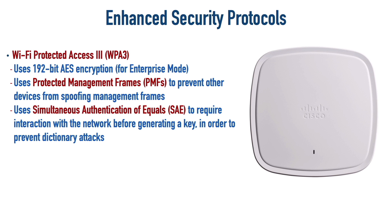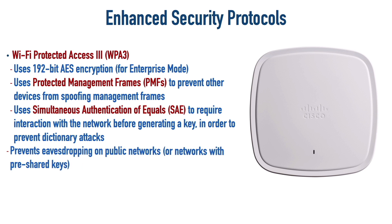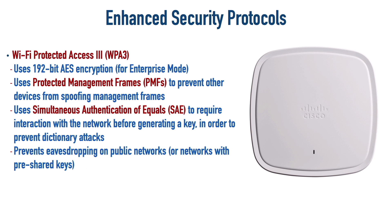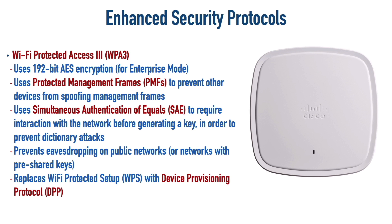WPA3 also provides protection for traffic using public networks — like when you've been at a coffee shop, airport, or hotel using a pre-shared key that everybody uses. And if you've set up wireless routers at home, you may have noticed a button labeled WPS — Wi-Fi Protected Setup — a way to more easily allow a client to join a network. But there was a vulnerability there. WPS has been replaced with DPP — Device Provisioning Protocol.